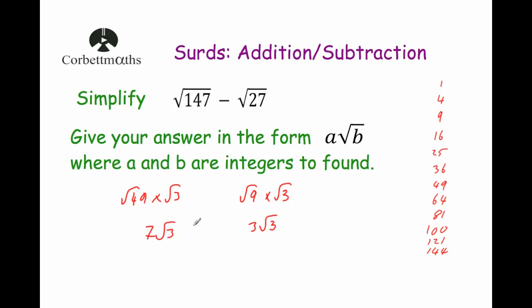Now we subtract: 7 Root 3 take away 3 Root 3 — well, 7 Root 3s minus 3 Root 3s is 4 lots of Root 3, so the answer is 4 Root 3. And that's in the form A Root B.